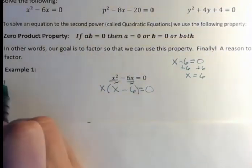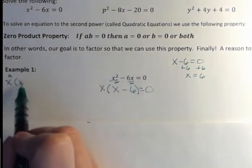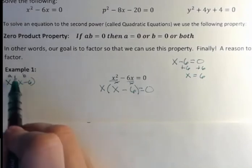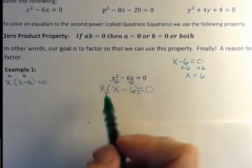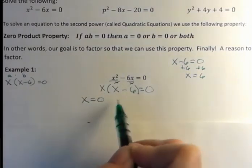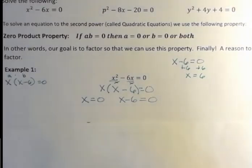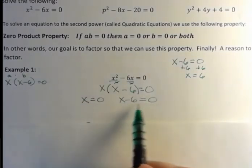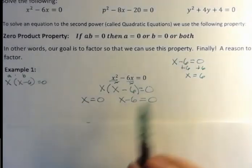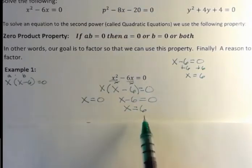So now we actually have written this in this form, A times B. x is like our A, and x minus 6 is like our B. So we're saying A times B equals zero. So to solve this, we set both parts, x equals zero, and x minus 6 equals zero. We set both parts equal to zero. So we factor, then we set all of our factors equal to zero. Well, this is already solved, and if I was to add six to both sides like I did up here, we would see x equals 6. So there's my two solutions.